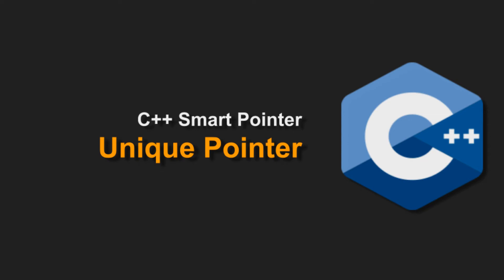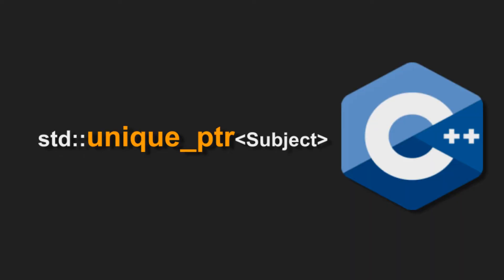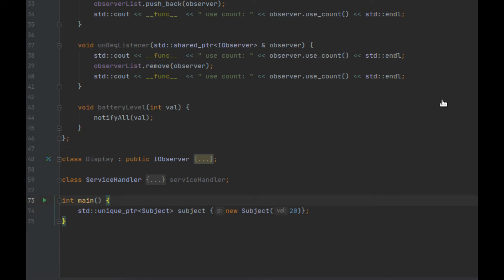In this session we are going to talk about unique pointer, which is a smart pointer. We will be talking about other smart pointers like shared pointer and weak pointer in other sessions, but this session is specifically about unique pointer. As the name says, unique pointer has only a unique reference to the allocated memory using this unique pointer library.